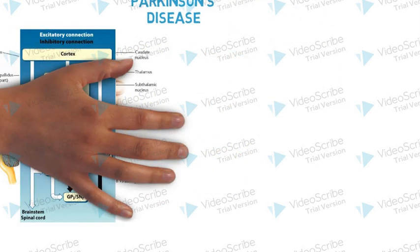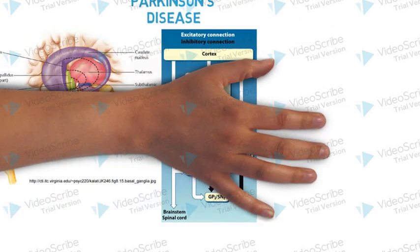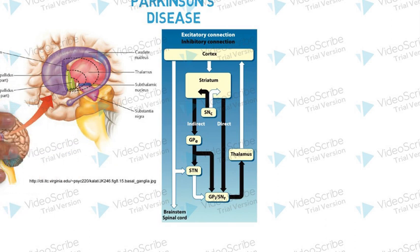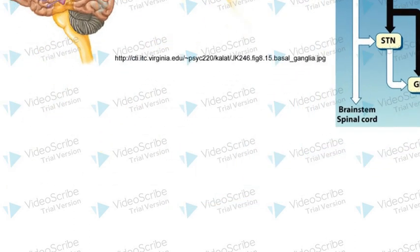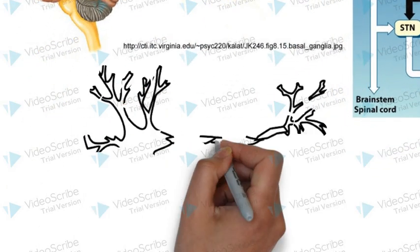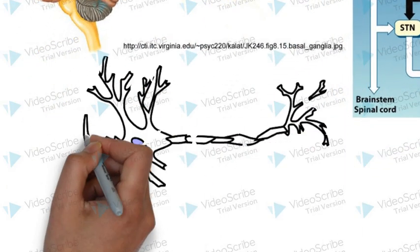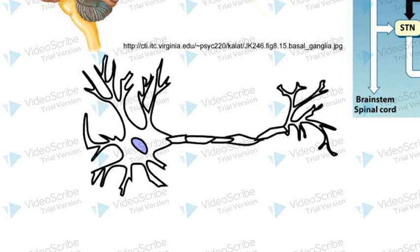The primary function of the basal ganglia is to provide a feedback mechanism to the cerebral cortex for the initiation and control of motor responses. Most of the output of the basal ganglia, which is mediated through the thalamus, is to dampen excitatory input to the cerebral cortex.